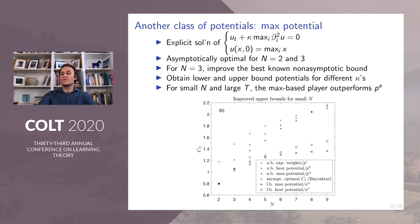For different values of kappa, we obtain lower and upper bounds. And for small N and large T, the max-based player shown by pluses here on this plot outperforms exponential weights, which is shown by stars here.